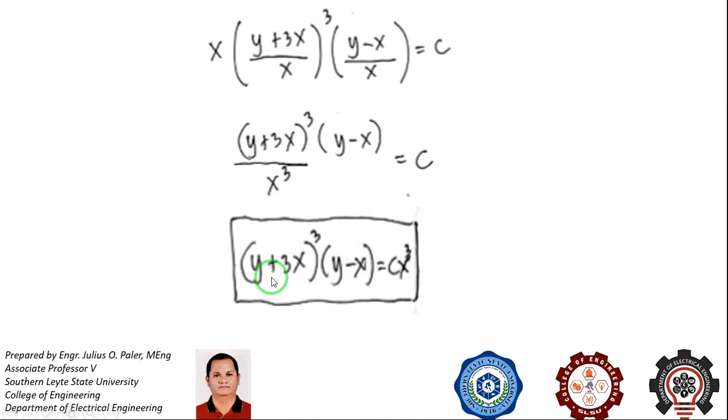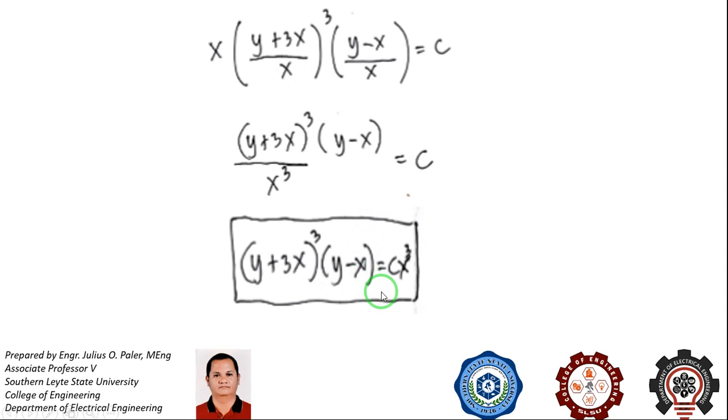Eliminating x³ by multiplying the entire equation by x³ gives us (y + 3x)³(y - x) = cx³. So that is the general solution and final answer on our third and final example.